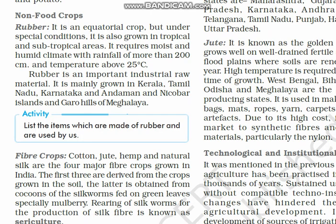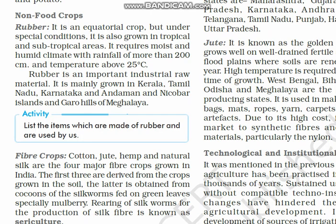The next non-food crop is fiber crops. Today we will cover cotton and jute as the major ones, along with sericulture and silk. Cotton, jute and hemp are derived from crops grown in the soil, whereas natural silk is obtained from cocoons of silkworms fed on mulberry leaves. The rearing of silkworms for silk production is referred to as sericulture.